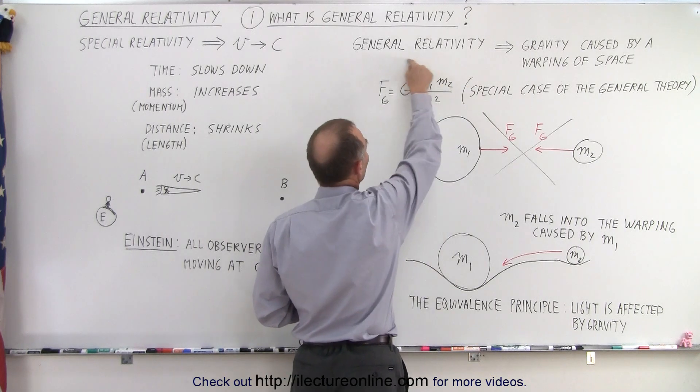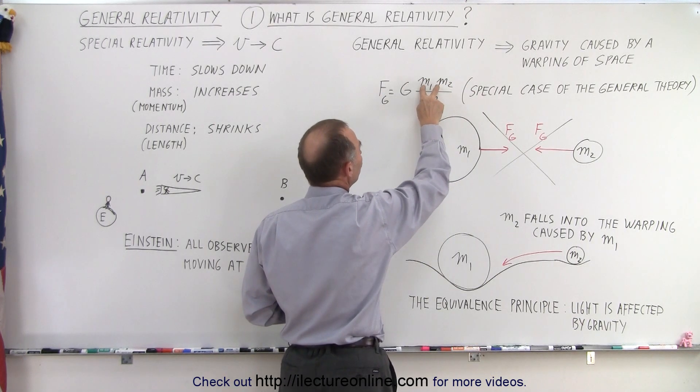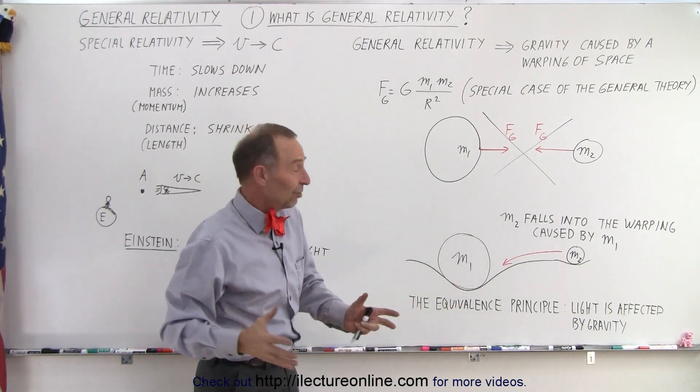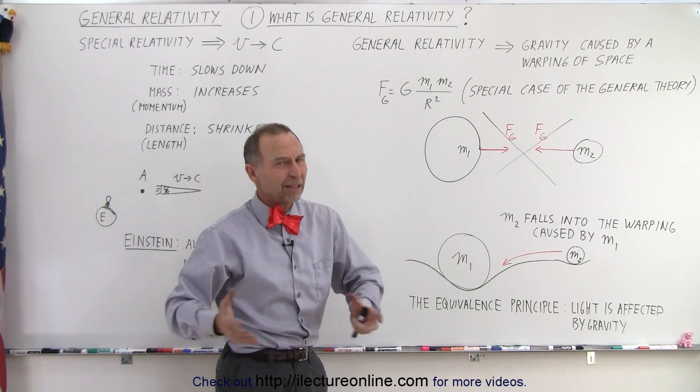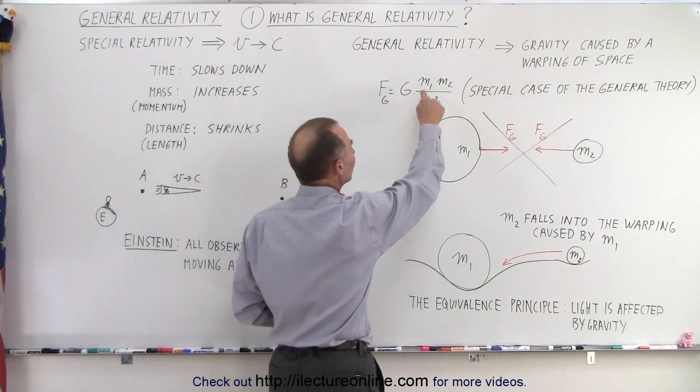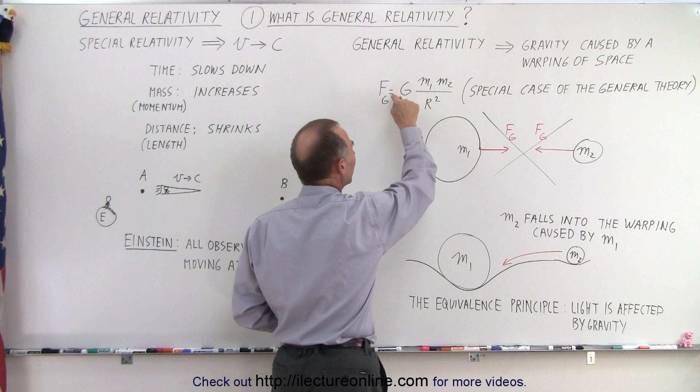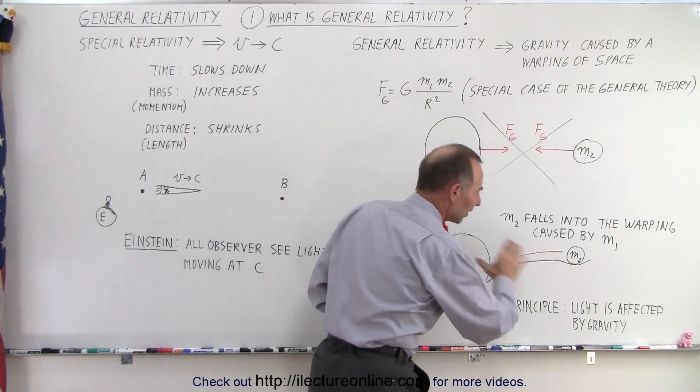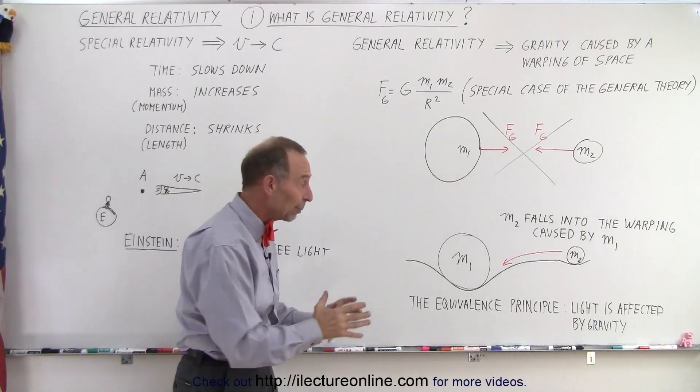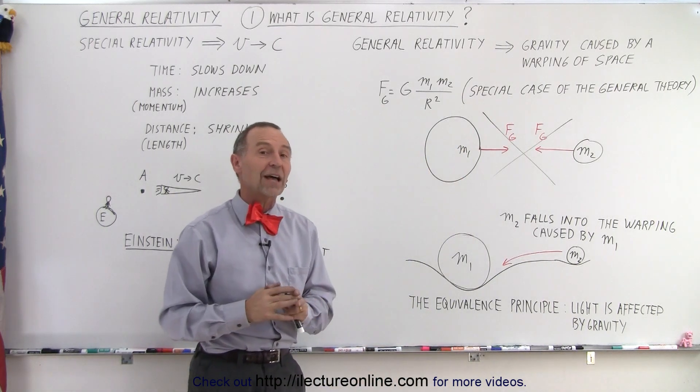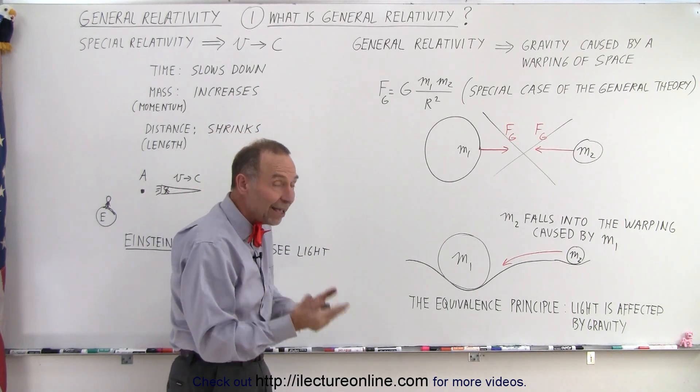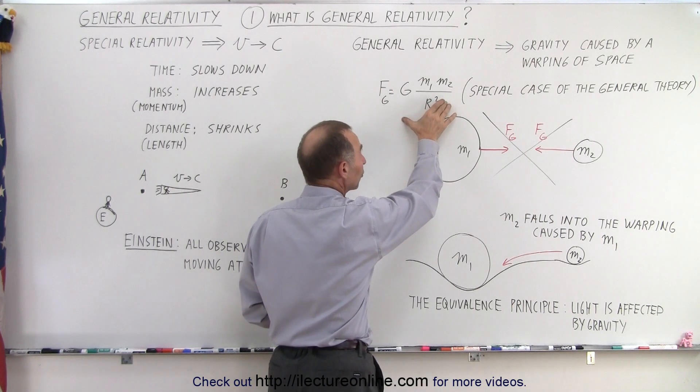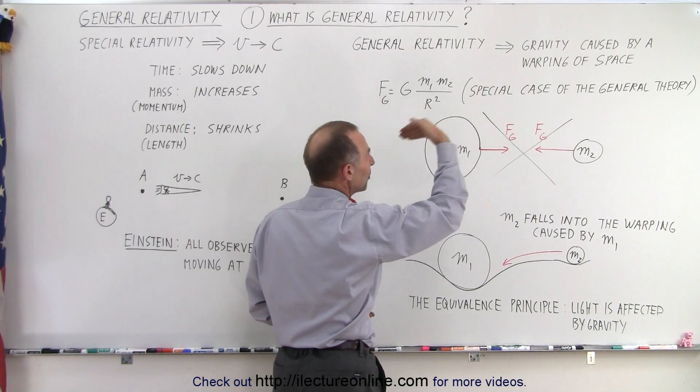Now, of course, when you go back to the equation by Newton, where we need the two masses multiplied together to experience a force, everybody at the time said, when Einstein claimed that light was affected by gravity, that's impossible, because if something here has zero mass, and this becomes zero, the force of gravity needs to be zero, so it is impossible for light to be affected by gravity. But later on, they were able to prove that this is actually correct, and once it was proven that light is affected by gravity,